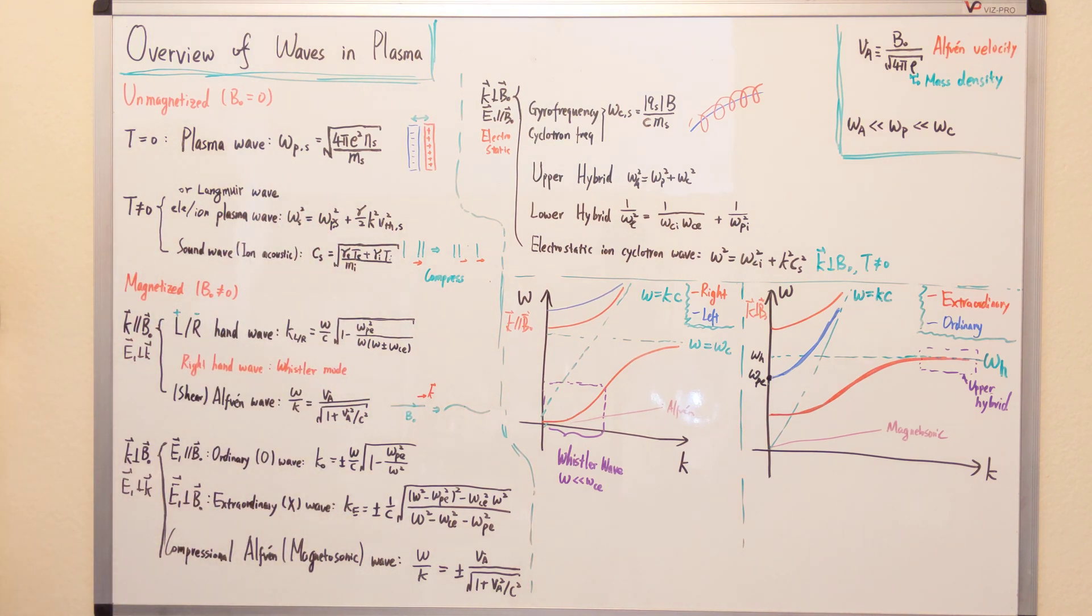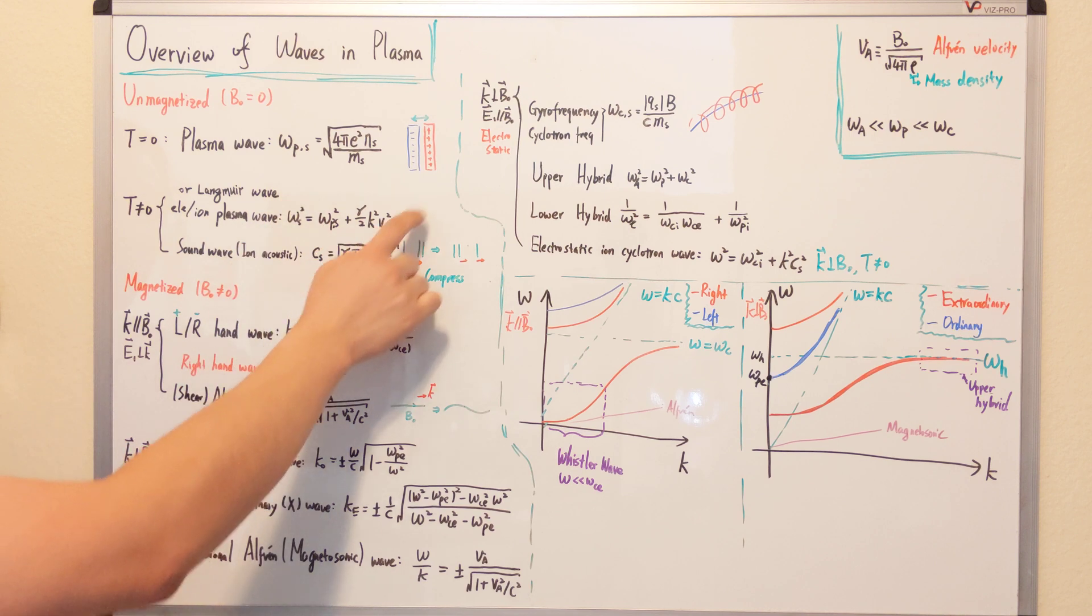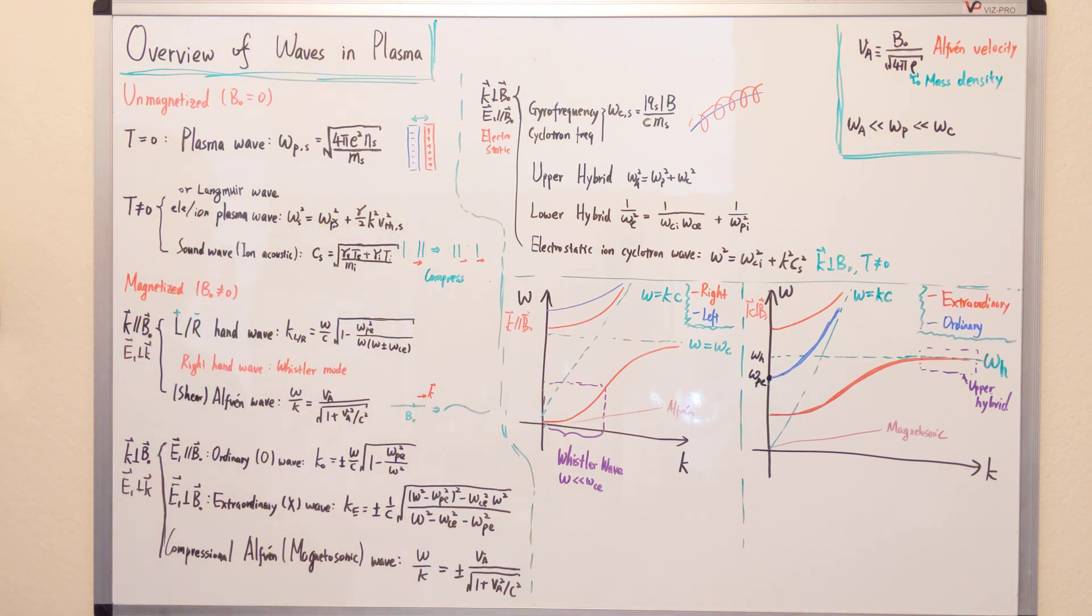And for temperature is not equal to zero, in other words, we consider the pressure gradient. We add another term here. Instead of just omega p, we have this term due to the pressure gradient.